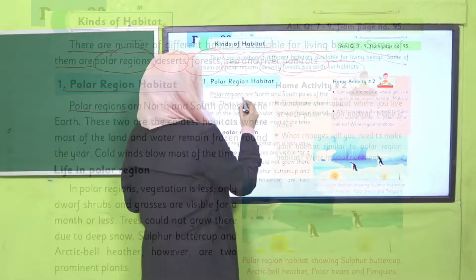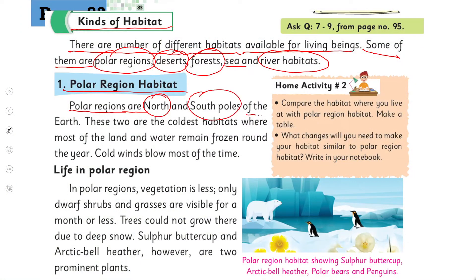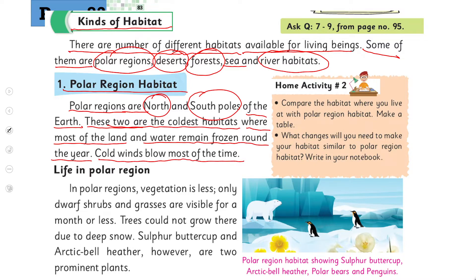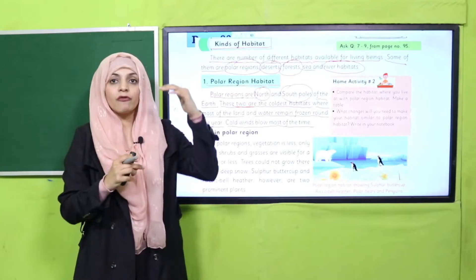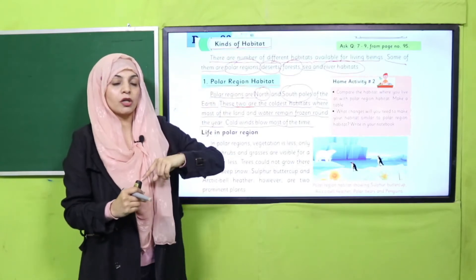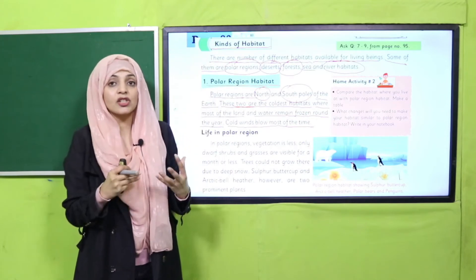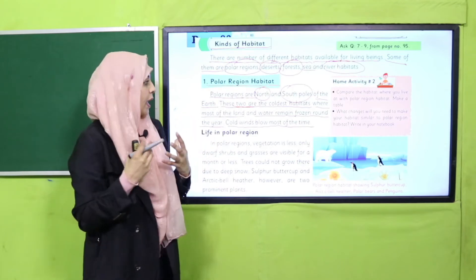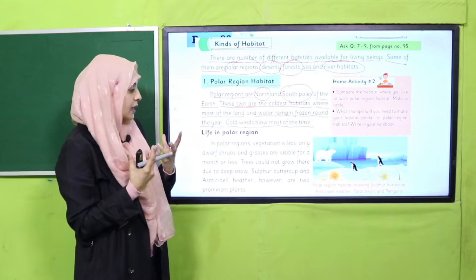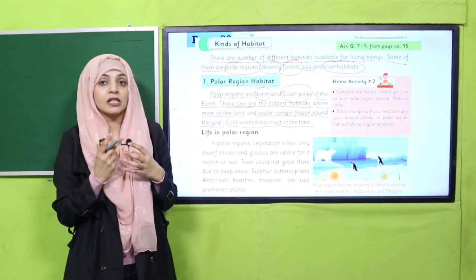Polar regions are the north and south poles of the earth. These are the coldest habitats where most of the land and water remain frozen around the year. Cold winds blow most of the time. Polar region habitats earth ke dono taraf hote hain - top pe aur bottom pe. One is north pole and the other is the south pole. Yahan par bohut zyadha sardi hoti hai, jiski wajah se har waqt yahan par snow rehta hai, paani jam jata hai, aur bohut thandi hawa chalti hai.